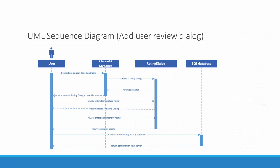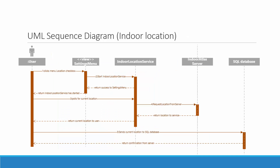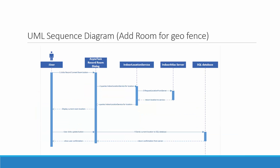This is the UML sequence diagram for adding user reviews. This is also the UML sequence diagram for indoor localization — showing how it goes from the user selecting to start reporting their location from the settings menu, to actually seeing the results and updating the database. This is the UML sequence diagram for adding a room for geofencing from the advanced perspective.